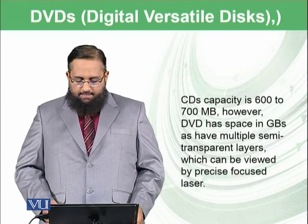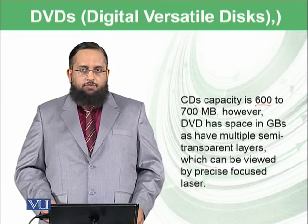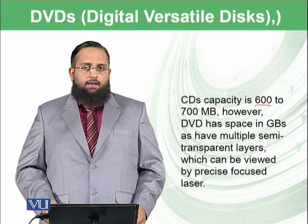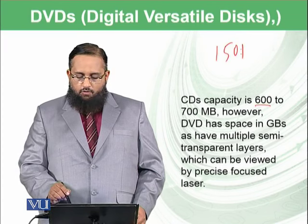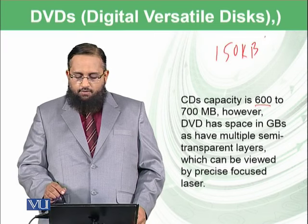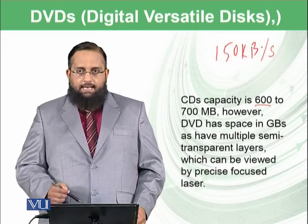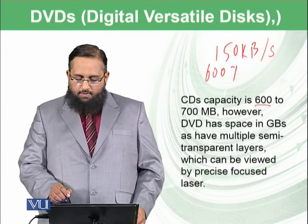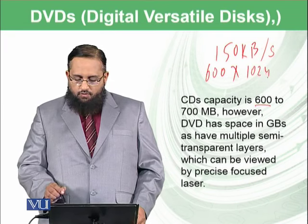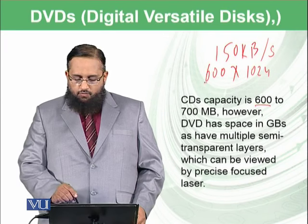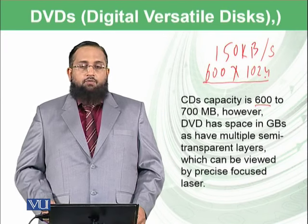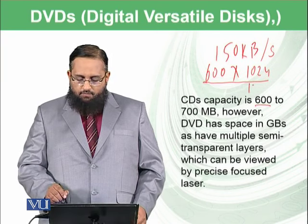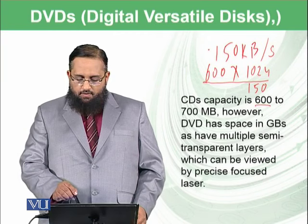The CD capacity is 600 megabytes to 700 megabytes. You can calculate this since 150 kilobytes are needed to store per second of data. Divide 600 multiplied by 1024 and then divide by 150, which gives the number of seconds you can store on the CD.